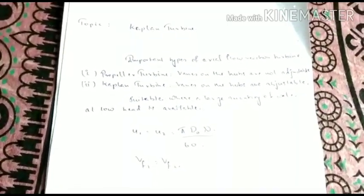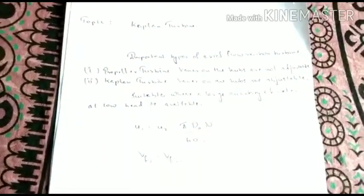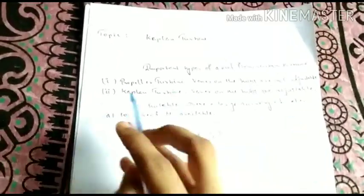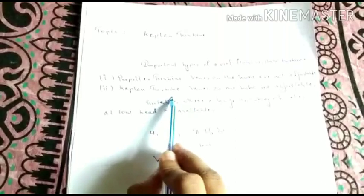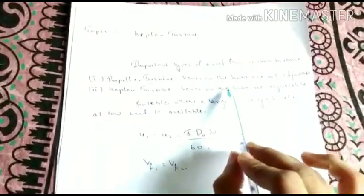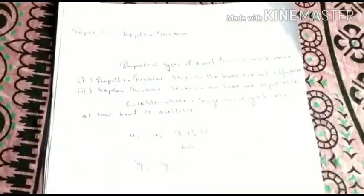Before that let me give you an overview of Kaplan turbines. There are two important types of axial flow reaction turbine. First one is propeller turbine, the other one is Kaplan turbine. The main difference between these two is that vanes on the hubs are adjustable for a Kaplan whereas it is not for a propeller turbine.